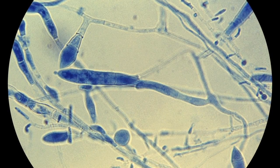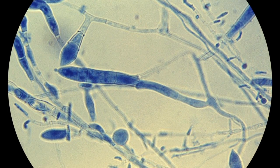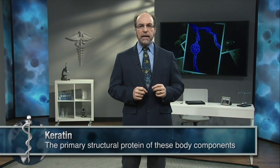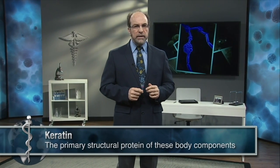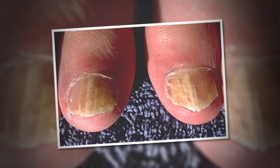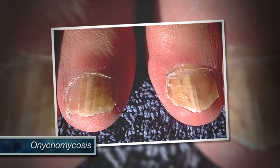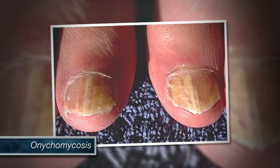These fungi live in the dead outside layers of the skin, hair, and nails. Keratin is the primary structural protein of these body components. Dermatophytes secrete an enzyme called keratinase, which partially digests layers of these body components. The disruption of keratin causes the loss of hair, scaling of the skin, and crumbling of the nails. When the nails are involved, the term is known as onychomycosis, leading to thickened, discolored, and brittle nails.